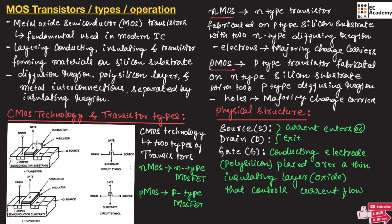The gate terminal is formed on a conducting electrode made of polysilicon, which is placed on an insulating layer made of oxide. This gate controls the flow of current between the drain and source terminals.